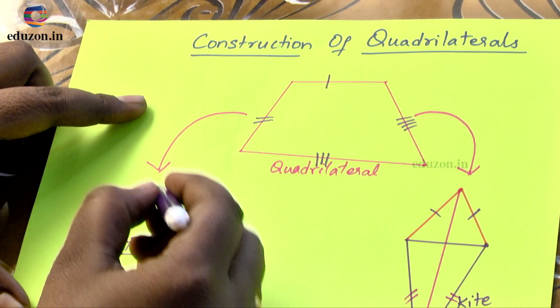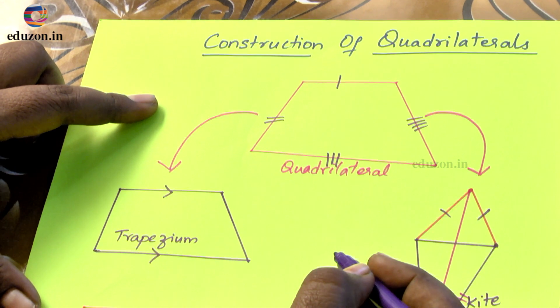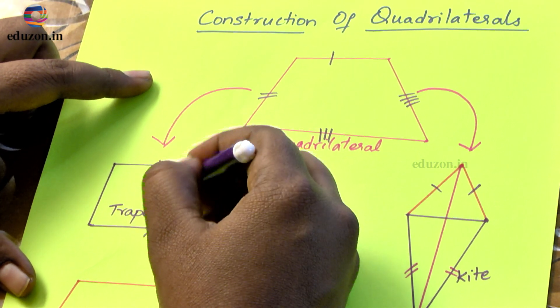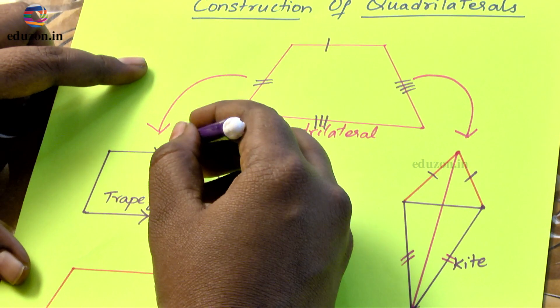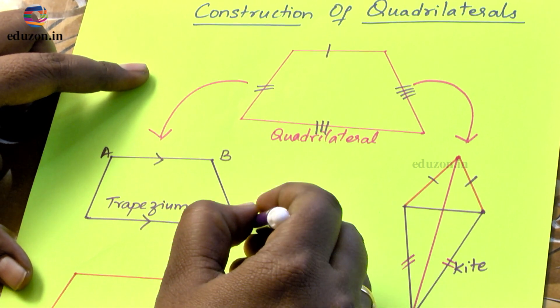But if you see that one of the opposite pairs is parallel to each other, in this figure you can observe that in this quadrilateral one of the opposite pairs... if I name it as A, B, C, and D.